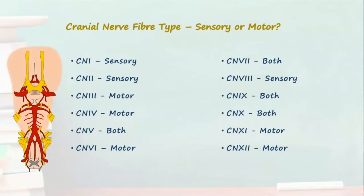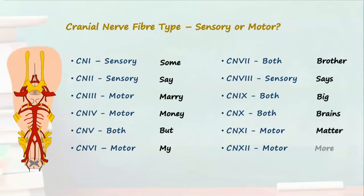To help you remember which cranial nerves have a sensory, motor or mixed function I like to use the following mnemonic which describes each cranial nerve's fiber type in numerical order. Some say marry money but my brother says big brains matter more. Three cranial nerves are purely sensory, five cranial nerves are purely motor and the remaining four cranial nerves have both a sensory and motor function. Now let's apply our newfound knowledge to some examples.